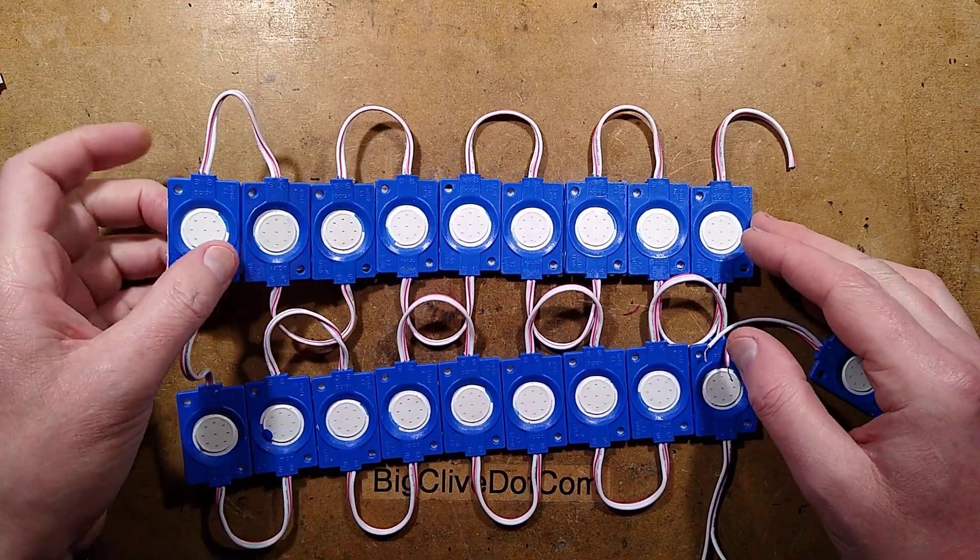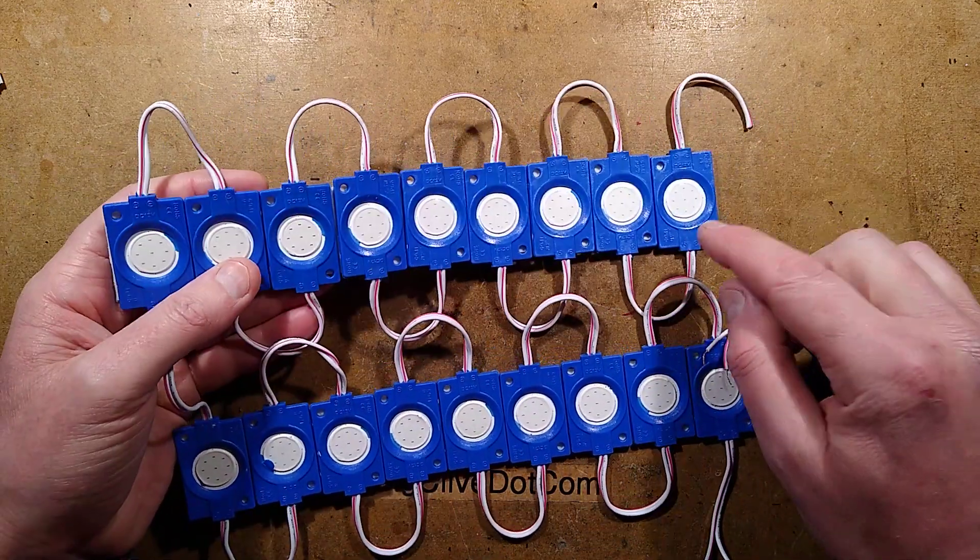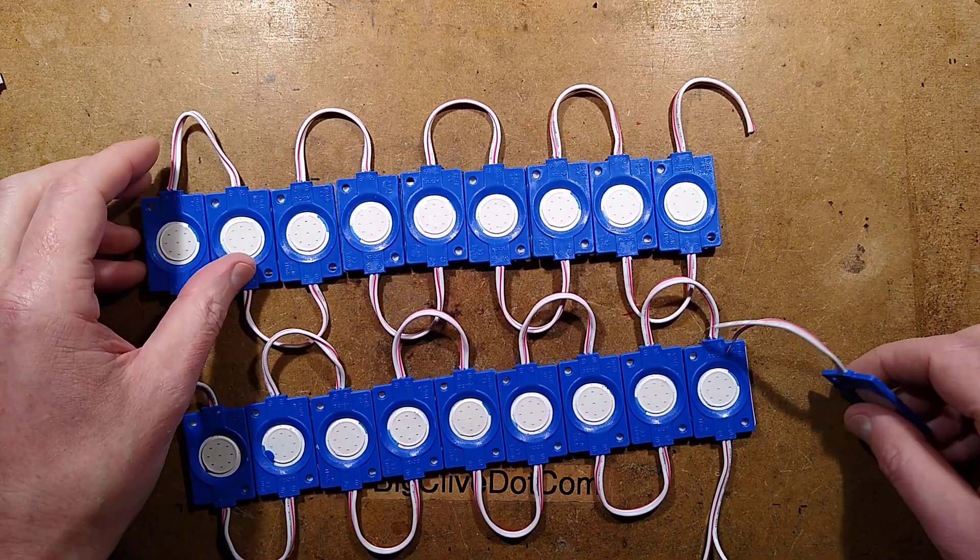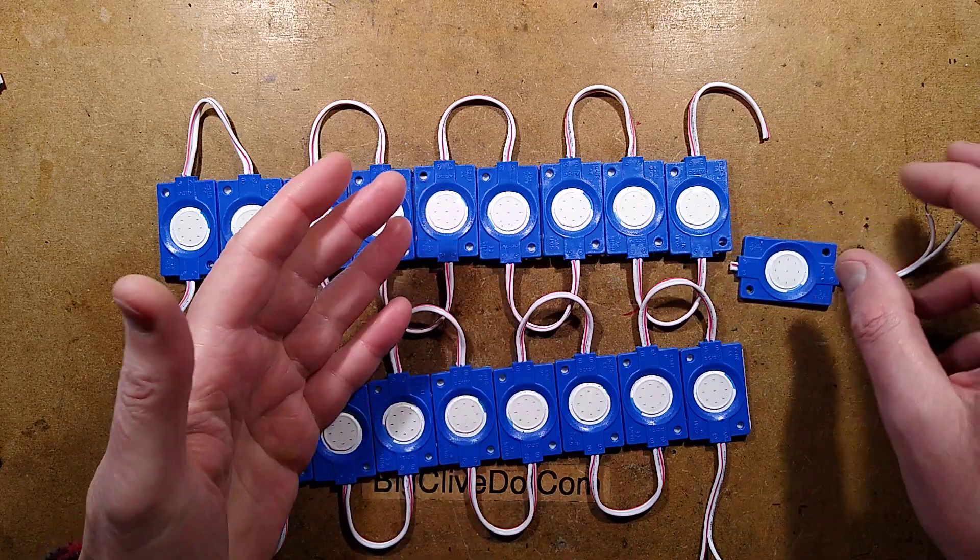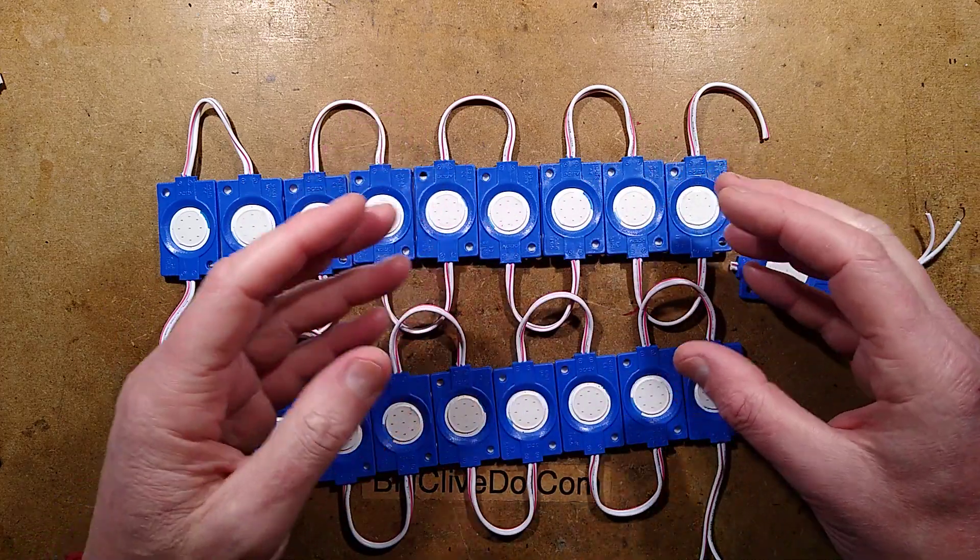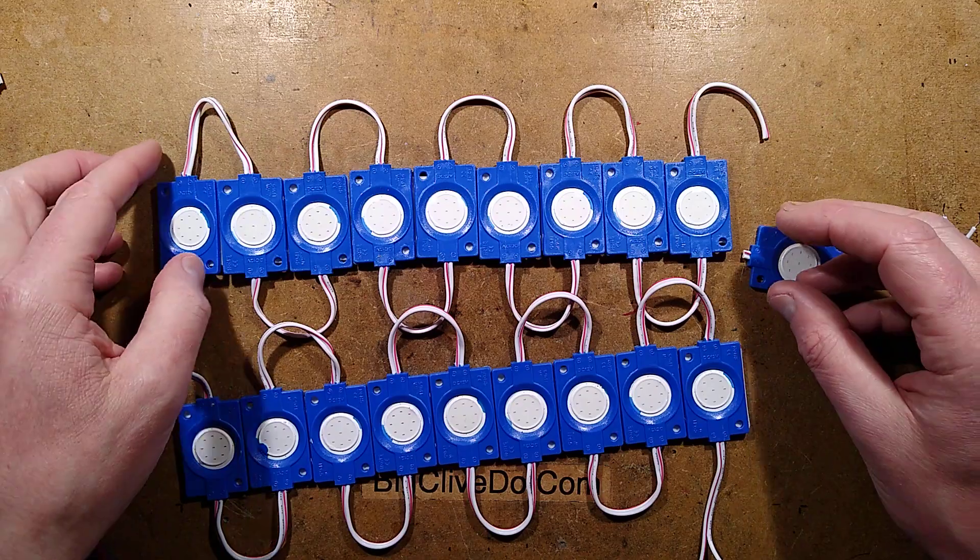Let's explore some more LED signage modules, and this time it's COB-based LED modules. These are basically strings of modules that are used inside signage, either inside the block channel letters or inside the boxes to illuminate from behind.